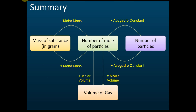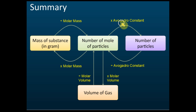In summary, from last lessons we learned about molar mass. If we know the mass of a substance, we find the number of moles by dividing mass by molar mass. If we know the number of moles and want to find the mass, we multiply by molar mass. To find the number of particles from moles, multiply by the Avogadro constant, which is 6.02 × 10²³. To go from particles back to moles, divide by the Avogadro constant.